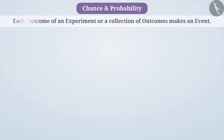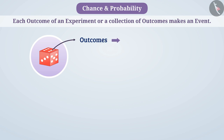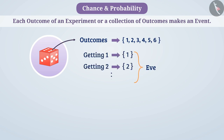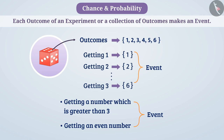Each outcome of an experiment or a collection of outcomes makes an event. For example, when we rotate a dice, then in this random experiment, getting one of the outcomes from 1, 2, 3, 4, 5, or 6 is an event. Similarly, getting a number which is greater than 3, or getting an even number, is also an event.